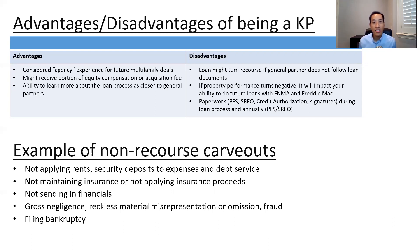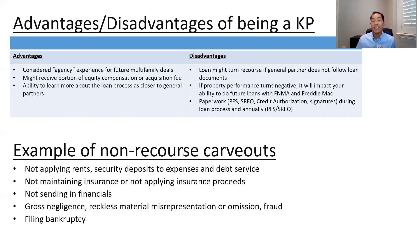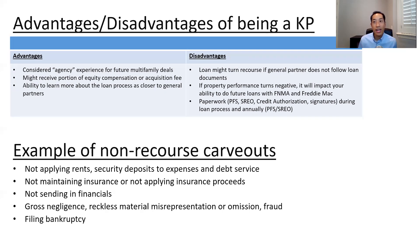When would a loan turn recourse? Here are the carve-outs: if the general partner collects rents or security deposits and doesn't use them to pay expenses; if you don't maintain insurance, or receive insurance proceeds (e.g., a $500,000 fire settlement) and don't apply them to the property; not sending in financials; gross negligence or material misrepresentation of the property or yourself; or if you file bankruptcy. For any of these reasons, the loan could turn recourse at the lender's discretion.